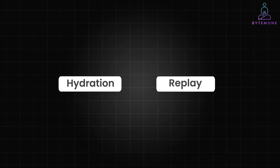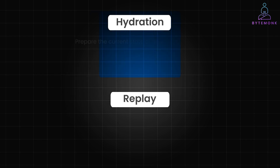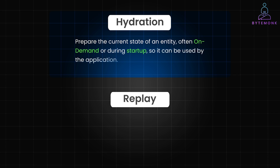Hydration and replay both involve processing events to reconstruct the current state of an entity, but they differ in context and usage. Hydration is the process of building or reconstructing an entity's current state by applying all relevant events from the event log. The primary goal of hydration is to prepare the current state of an entity — often on demand or during startup — so it can be used by the application. For example, when a query is made to get the current price of a product, hydration is triggered to apply all relevant events like product created, price updated, etc., and generate the current product state.